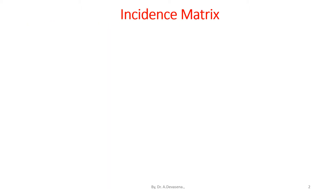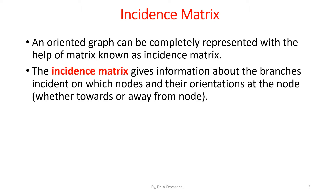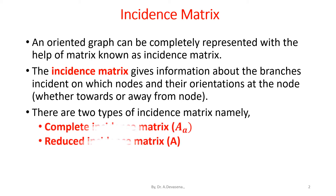Let us start discussing about the incidence matrix. An oriented graph can be completely represented with the help of a matrix known as incidence matrix. The incidence matrix gives information about the branches incident on which nodes and their orientations at the node, whether towards or away from the node. There are two types of incidence matrix: complete incidence matrix, represented by capital A suffix small a, and reduced incidence matrix, represented by capital A.